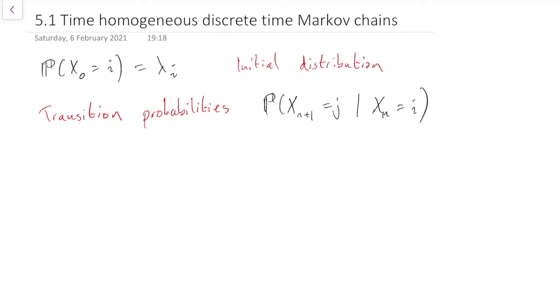So for example, let's think about what these are for the simple random walk, SRW, simple random walk. Well, we said that for the simple random walk, we always start from state 0. So we have lambda 0 equals 1,